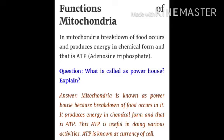The function of mitochondria: breakdown of food occurs in mitochondria and it produces energy in chemical form, stored as ATP — adenosine triphosphate. That is why mitochondria is called the powerhouse of the cell. Mitochondria produces energy because breakdown of food occurs in it, producing ATP, which is useful in doing various activities. ATP is known as the currency of the cell.